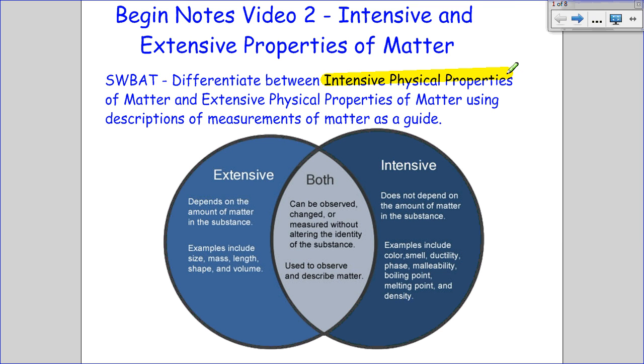So these are our main focus today: intensive physical properties and extensive physical properties. This Venn diagram is a great example. It gives many examples of extensive and intensive properties. Feel free to pause this video and write that down as an accessory to your notes. There isn't an actual blank Venn diagram in your notes packet, but this is a great diagram that compares and contrasts both extensive and intensive physical properties.